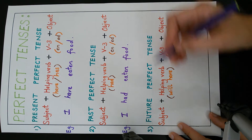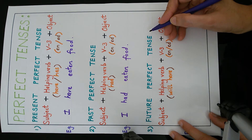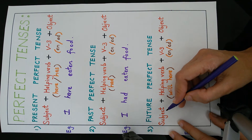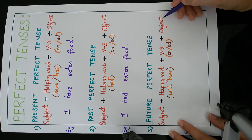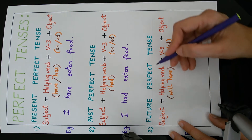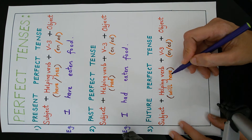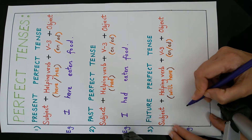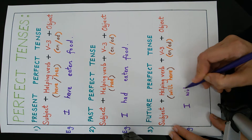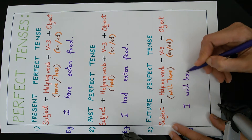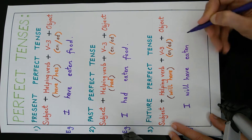Now we come to the next one, future perfect tense. The formula is subject plus helping verb plus V3 plus object. For future perfect, the helping verb is 'will have'. The sentence is: I will have eaten food.